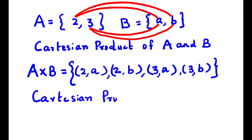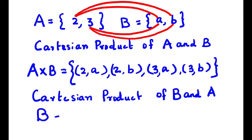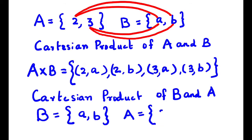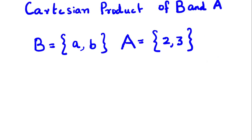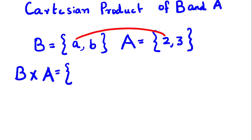Now let us find the Cartesian product of set B and set A. For this, we write the elements of set B first, then the elements of set A. Cartesian product of set B and set A is denoted as B cross A, which is equal to the set of all ordered pairs.